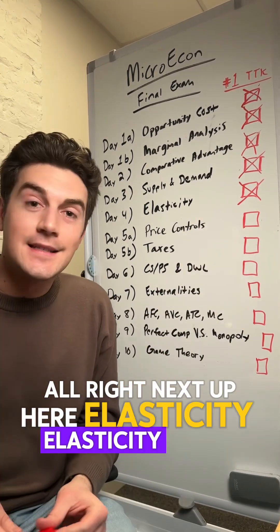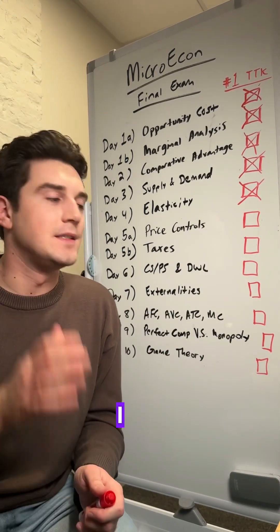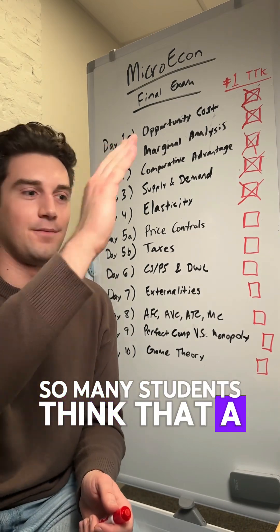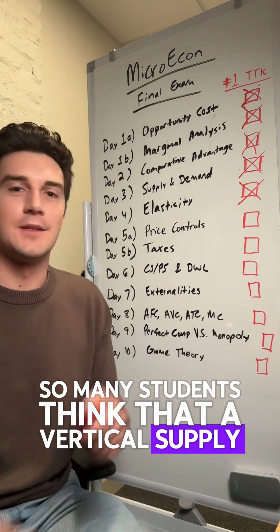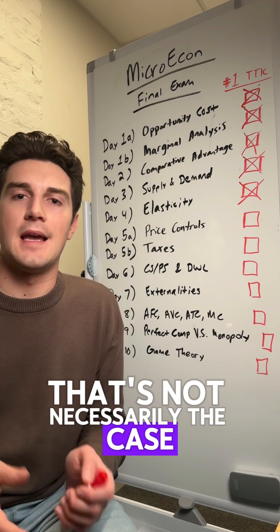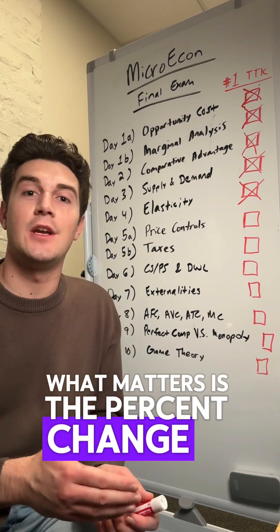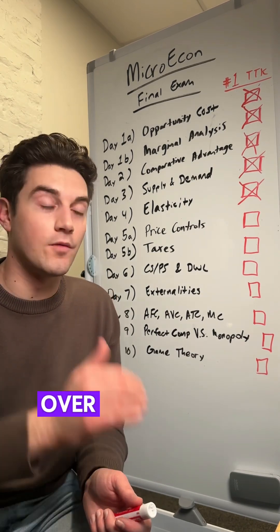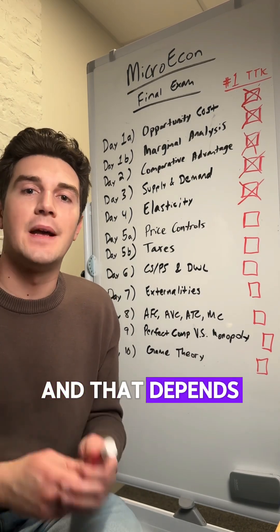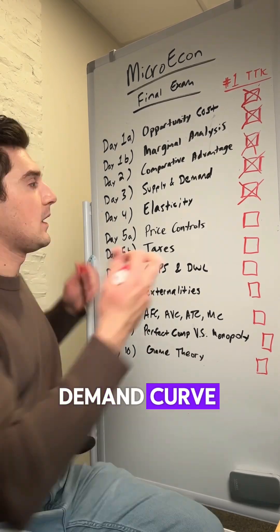Elasticity is not slope. I see so many students think that a vertical supply curve is inelastic — that's not necessarily the case. What matters is the percent change in quantity over the percent change in price, and that depends on the two points we're moving between on our supply or demand curve.